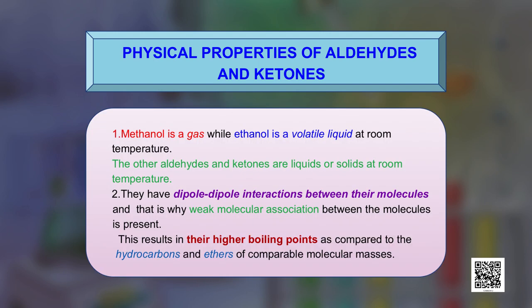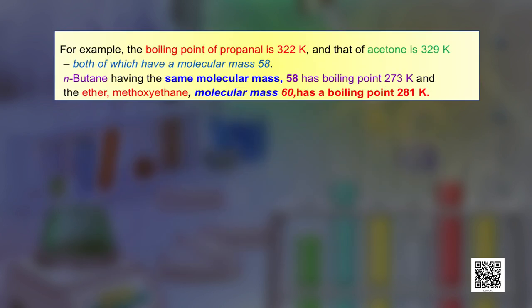Methanal is a gas while ethanal is a volatile liquid at room temperature. Other aldehydes and ketones are liquids or solids at room temperature. They have dipole-dipole interactions between their molecules, resulting in weak molecular association and higher boiling points compared to hydrocarbons or ethers of comparable molecular masses. For example, the boiling point of propanal is 322 K and that of acetone is 329 K, both with molecular mass 58, while n-butane (molecular mass 58) has a boiling point of 273 K.